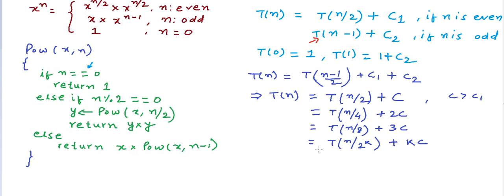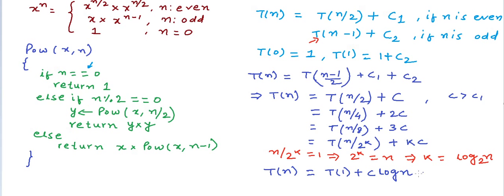Now let's express T(n) in terms of T(1). Setting n divided by 2^k equal to one implies 2^k equals n, or k equals log n to the base two. So T(n) equals T(1) + c·log n, where c is a constant and T(1) is also a constant equal to 1 + c2. The overall expression is 1 + c2 + c·log n, so the time taken T(n) is proportional to log n. This is an O(log n) algorithm in terms of time complexity.